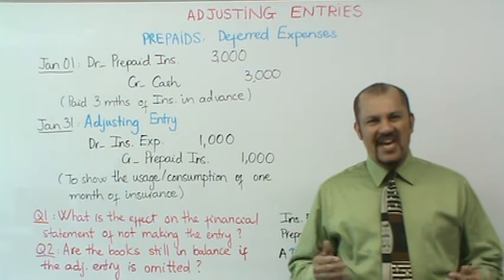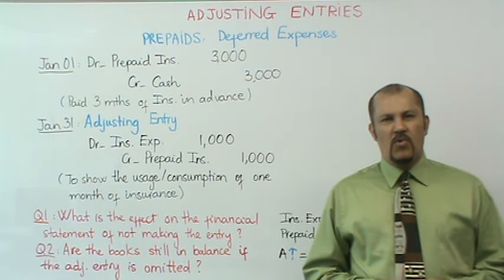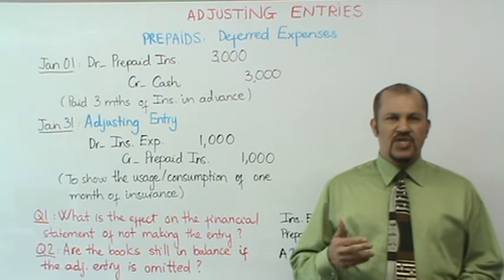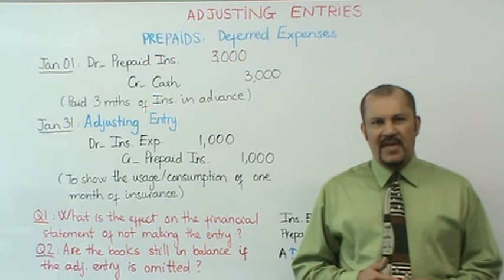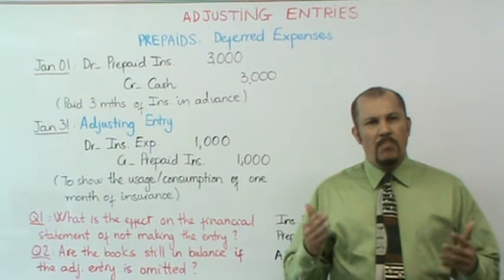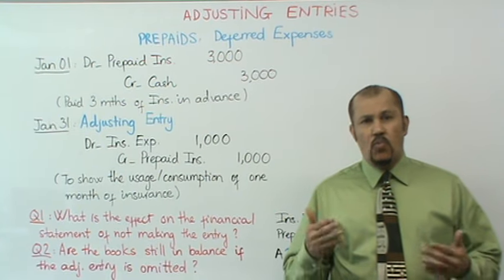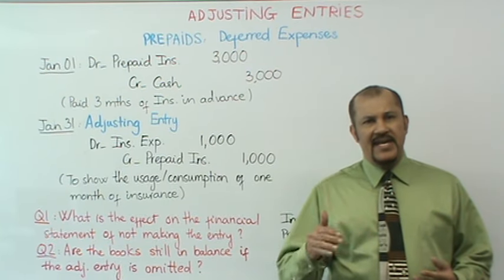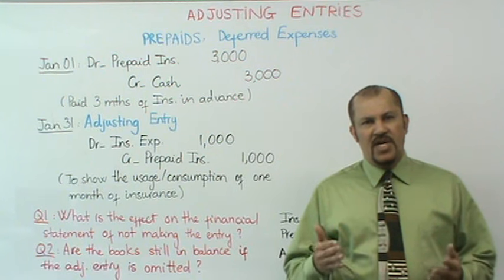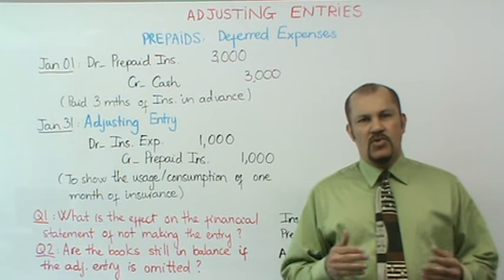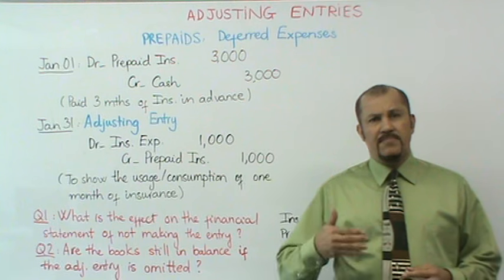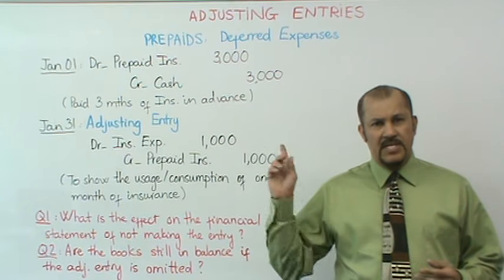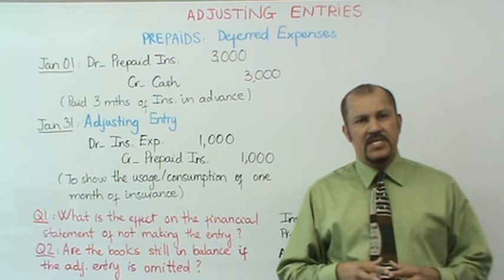Hi, this is Professor Lazarus again. In this segment we are going to talk about adjusting entries. Specifically, we'll talk about two adjusting entry situations: prepaids and supplies. An adjusting entry is merely a journal entry that is made at the end of the month in order to adjust certain accounts. We need to adjust certain accounts because some things may have transpired during the month, or simply because of the passage of time, as we'll demonstrate with the prepaid insurance situation.